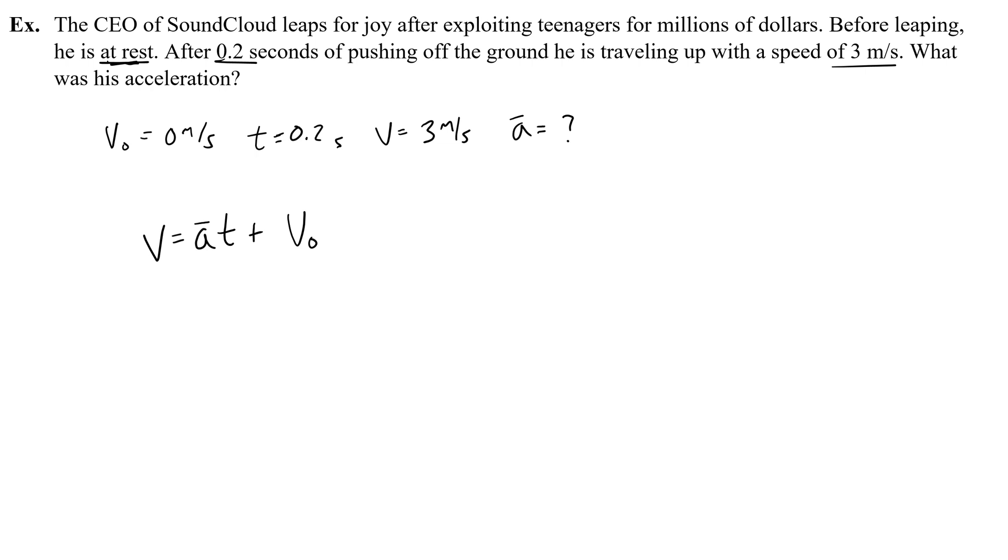Now we solve. Plug in anything that's 0, which I see my initial velocity is 0, so this goes away. And rearrange to get A by itself, which is really easy. I just divide both sides by T. I'm going to get the acceleration is V over T, or 3 meters a second divided by 0.2 seconds, which will give me 15 meters per second per second, or meters per second squared. Good job. You're doing great. Let's do another.